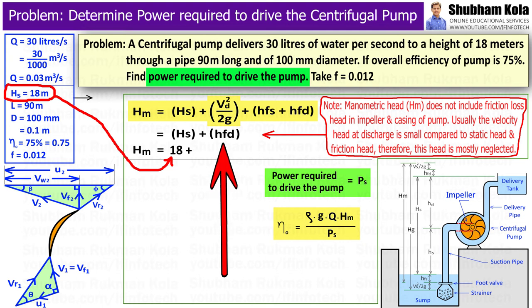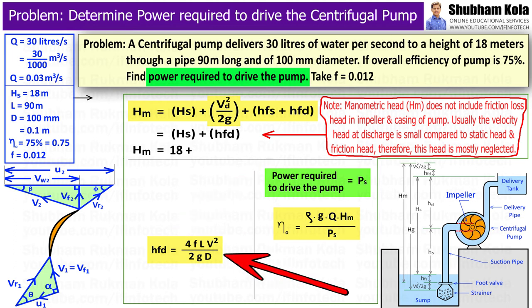And we need to calculate friction head loss. That is, hf we need to calculate. So, it can be calculated by the formula hf equal to 4fLV² upon 2gD, where friction factor small f equal to 0.012.